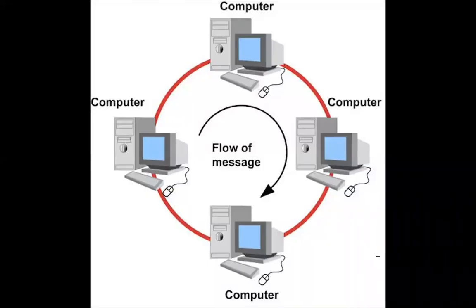This is a ring topology, whereby data packets travel in a single direction around the ring from one network device to the next. Each device acts as a repeater, meaning it generates the signal, and it moves in one direction along the ring.